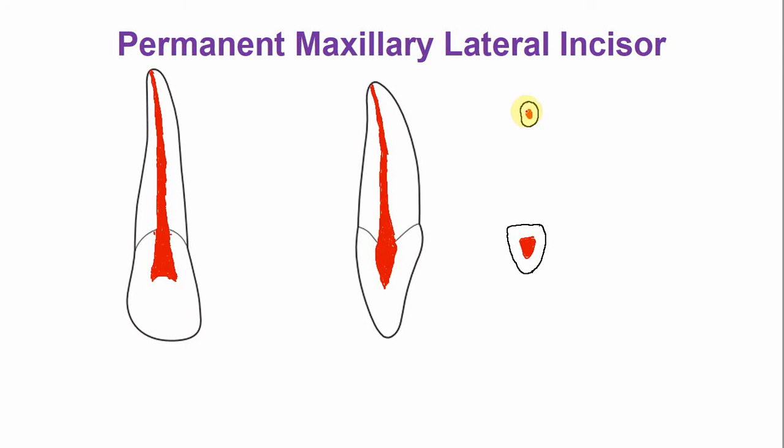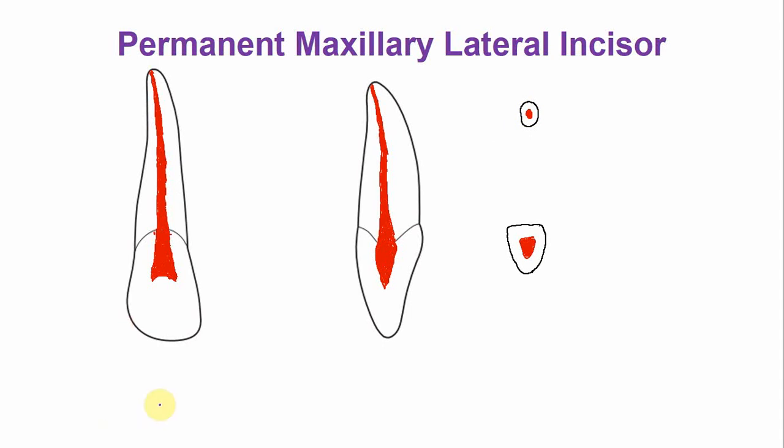What are the age changes that occur within the endodontic anatomy of the permanent maxillary lateral incisor? With age, there is more deposition of secondary dentine and sometimes tertiary dentine. Overall, the size of the pulp chamber and the canal is reduced. The pulp points are obliterated — there are no pulp points.